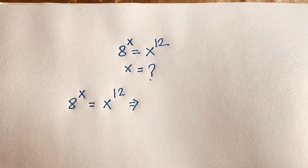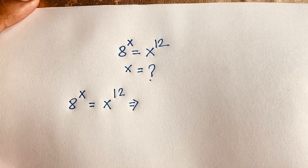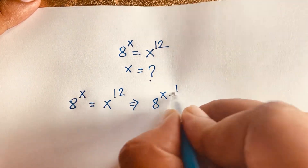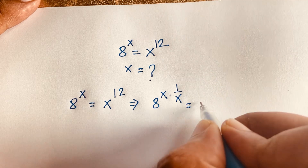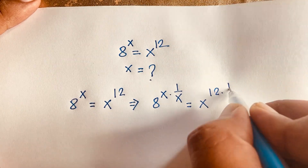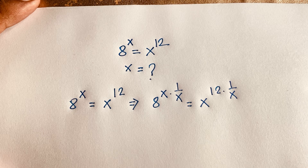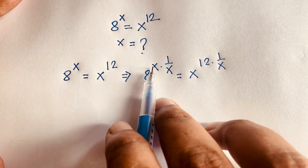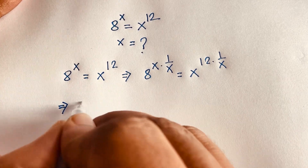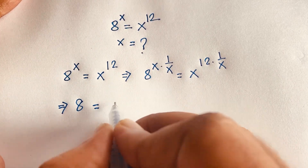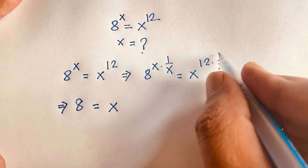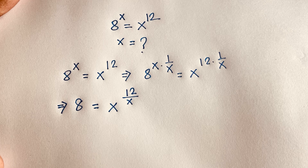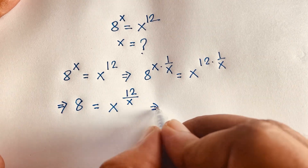I apply exponent 1 over x to both sides. So 8 to the power x times 1 over x is equal to x to the power 12 times 1 over x. The x exponents cancel, giving us 8 is equal to x to the power 12 over x.